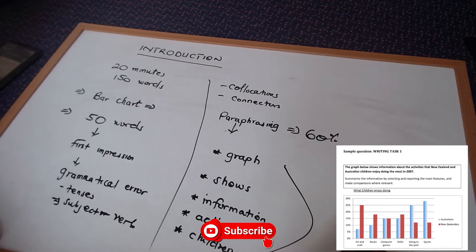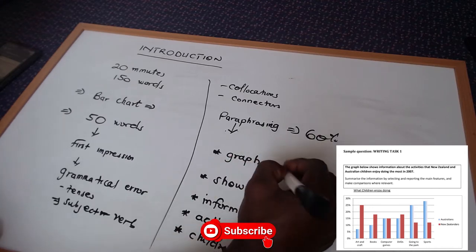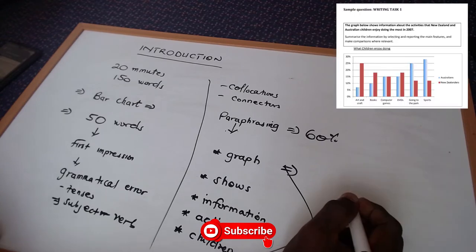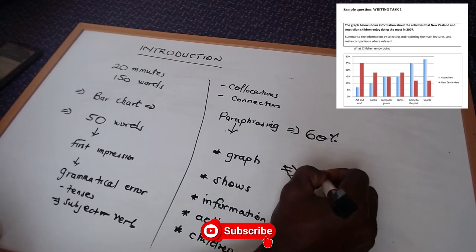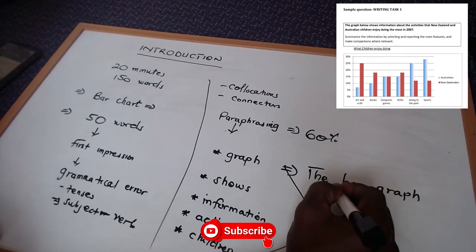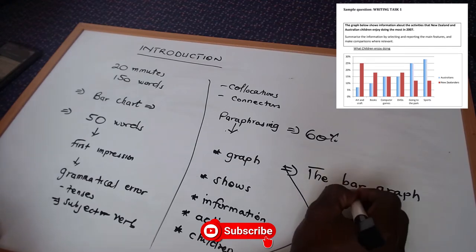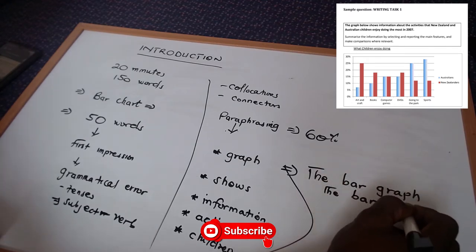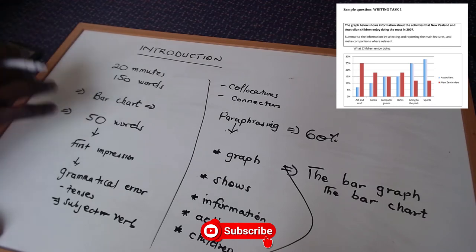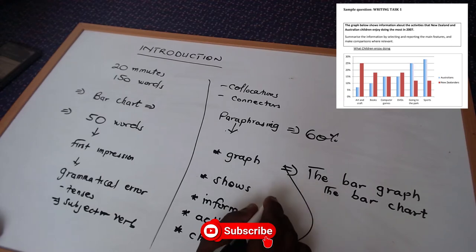Now let's see what word we want to replace 'graph' with. Since I know the diagram is a bar chart, instead of just writing 'the graph' I will say 'the bar graph' or 'the bar chart.' By adding something new that is not stated in the question but is accurate, we have paraphrased. Now moving on to the word 'shows.'